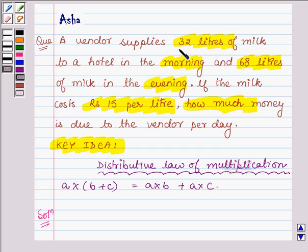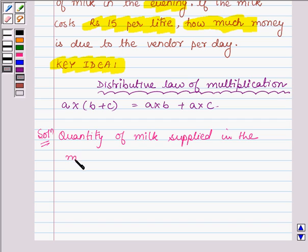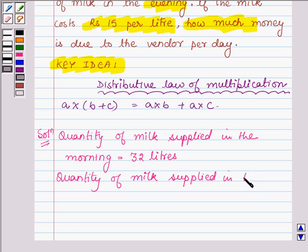First we are given that he supplies 32 litres of milk in the morning. So, quantity of milk in the morning is equal to 32 litres. And, the quantity of milk supplied in the evening is equal to 68 litres.